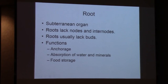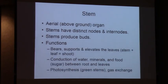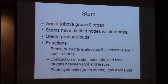Students sometimes have difficulty distinguishing root from stem or leaf. Stems are typically above-ground aerial organs, and they always have nodes and internodes - generally distinct nodes and internodes, though some modified stems are less obvious. Stems also produce buds - these are two fundamental differences between roots and stems. The function of the stem is to bear and support the leaves, elevate the leaves so they can harness sunlight more efficiently, and to conduct water, minerals, and food in the form of sugar between the roots and the leaves. Green stems also do photosynthesis and gas exchange.